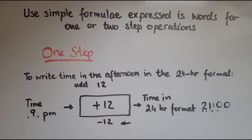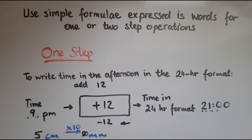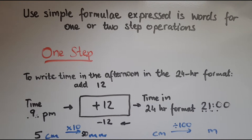Other examples include converting measurements from centimetres to metres or centimetres to millimetres. It might be stated in words that to convert from centimetres to millimetres, you multiply by 10. So if you're given 5 centimetres, 5 times 10 makes 50 millimetres. Or to convert centimetres into metres, you divide by 100. So 550 centimetres divided by 100 gives 5.5 metres.